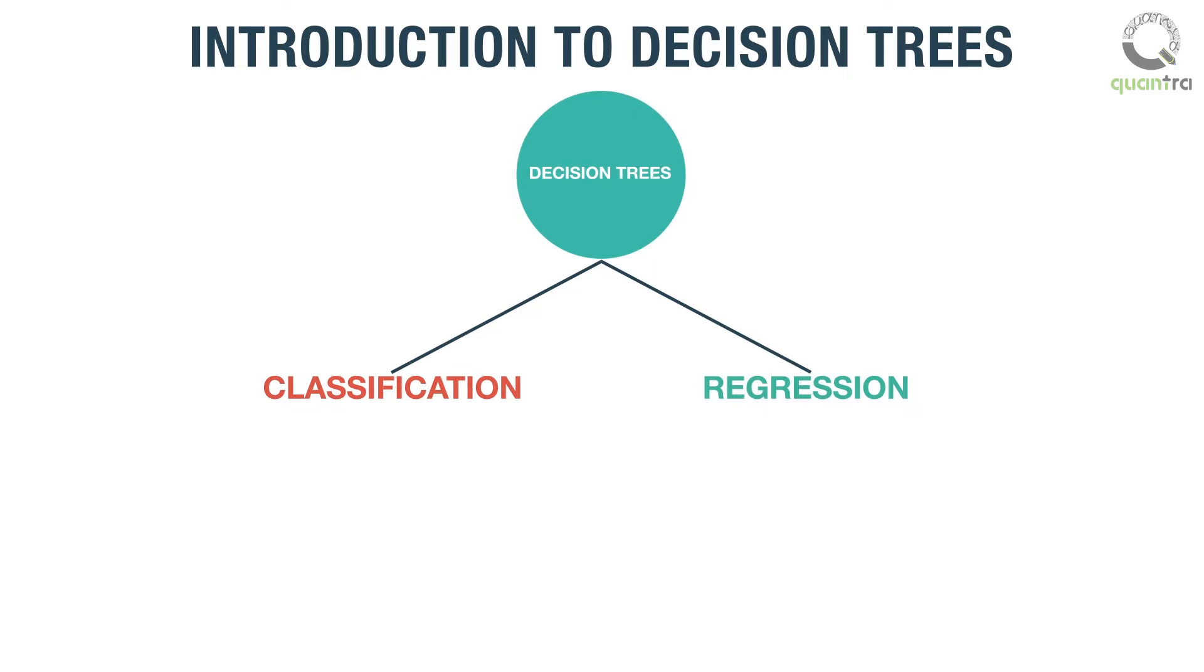We have two main types of decision trees: classification trees in which the target variable is categorical, that is of yes and no types, and regression trees in which the target variable is of continuous data types like a number.